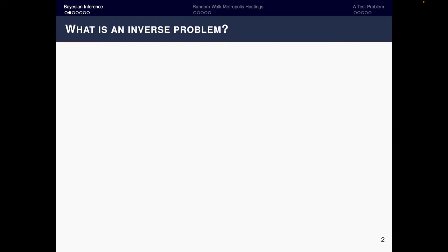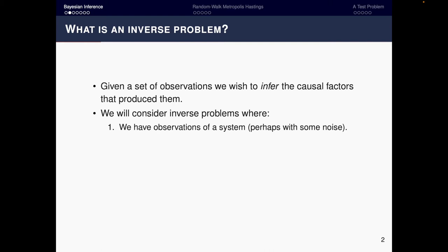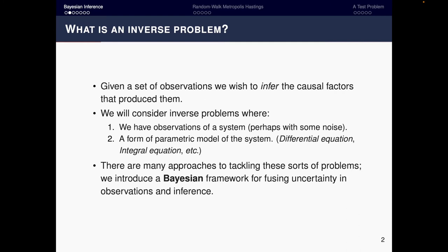Let's start with an introduction to Bayesian inference. What is an inverse problem? Quite loosely, given a set of observations we wish to infer the causal factors that produce them. More concretely, if we have observations of a system perhaps with some noise, and a parametric model — such as a differential equation or integral equation — then what we aim to do is infer the parameters of the system given the observations. We'll introduce a Bayesian framework that allows us to fuse the uncertainty in our observations and make predictions about the parameters via inference.